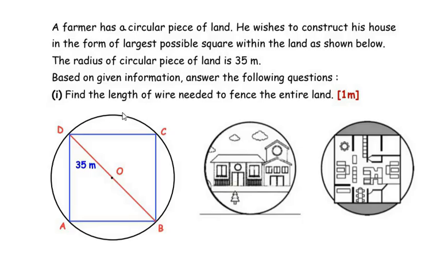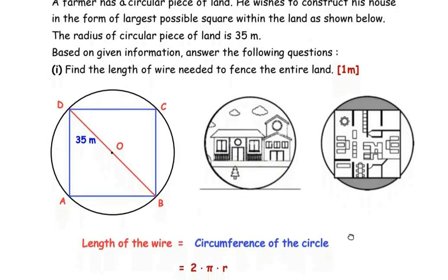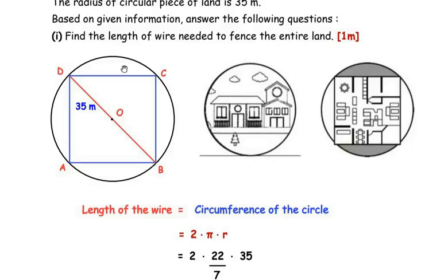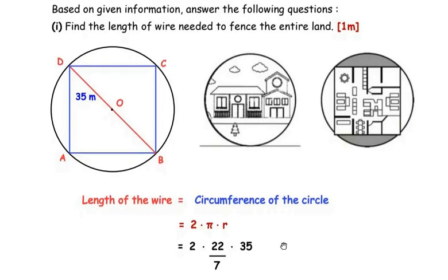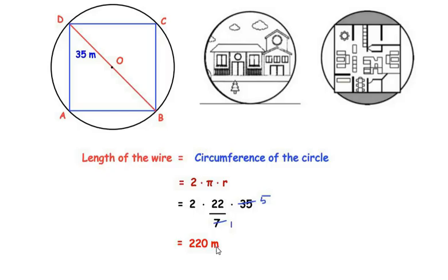If he is going to fence the entire piece of land, we are talking about the perimeter or circumference of the circle. The length of wire needed to fence the entire circular piece of land equals the circumference of the circle. The formula is 2πr, where we take π as 22/7. So we get 2 × (22/7) × 35. Since 7 divides 35, we get 2 × 22 × 5 = 44 × 5 = 220 meters. The length of wire required is 220 meters.